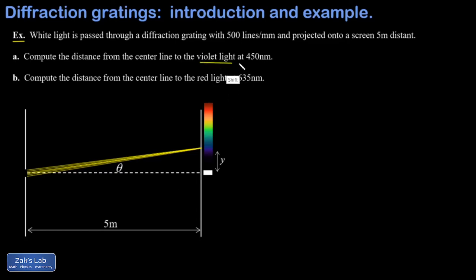When we study atomic physics, we use diffraction gratings built into cheap spectroscope instruments or expensive spectrophotometer instruments to separate wavelengths of light emitted by an excited gas. The diffraction grating is the core technology of a spectrometer. For our example, white light passes through a diffraction grating with 500 lines per millimeter, projected onto a screen five meters distant. In part a we want the distance from the center line to where 450 nm violet light interferes constructively; in part b, the same distance for 635 nm red light.